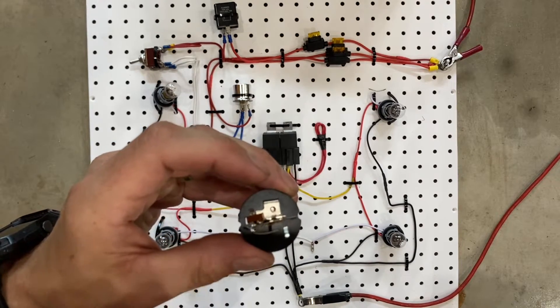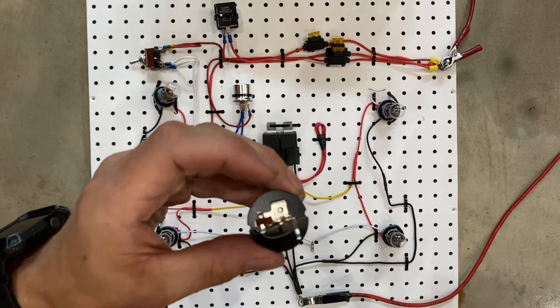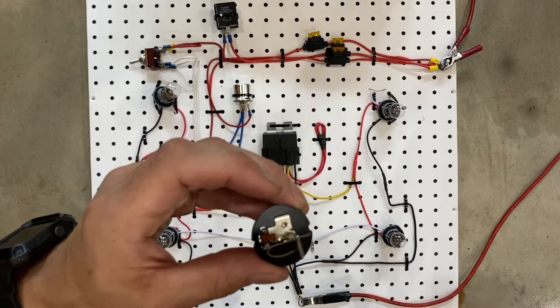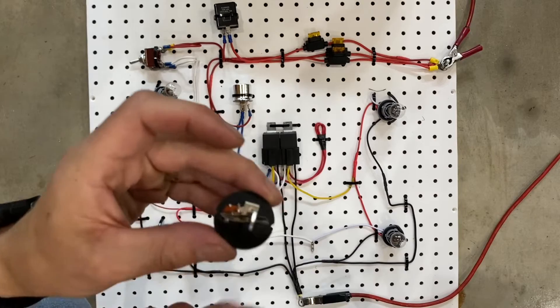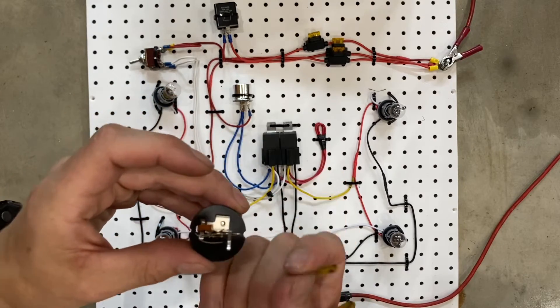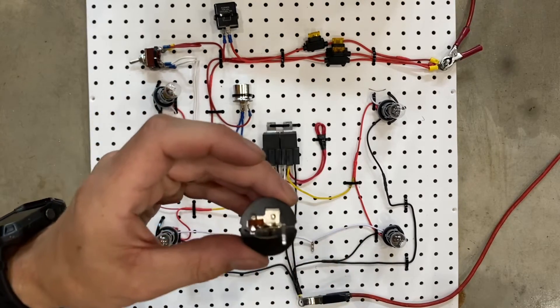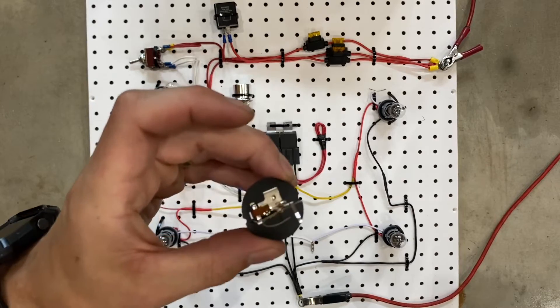As soon as it cools down, it opens back up again and the lights turn off. Then it gets warm again with more electricity and it bends and touches again, so it basically just opens and closes repeatedly and flashes the lights. Let's hook it up to some electricity and I'll show you.